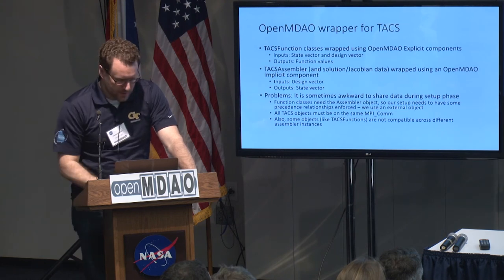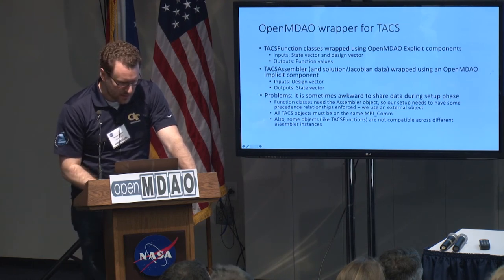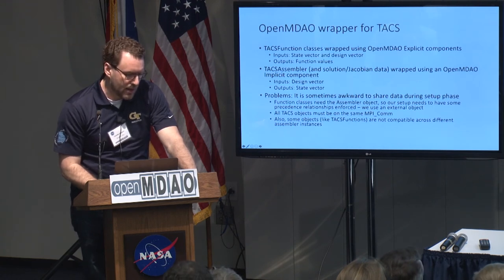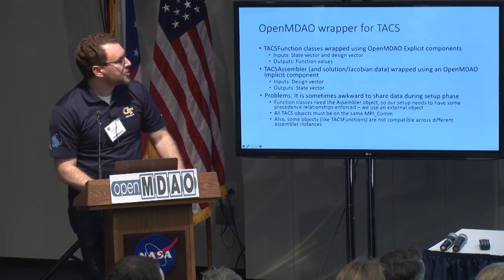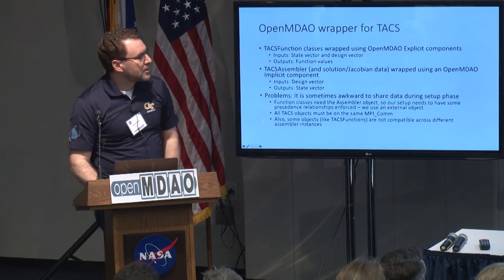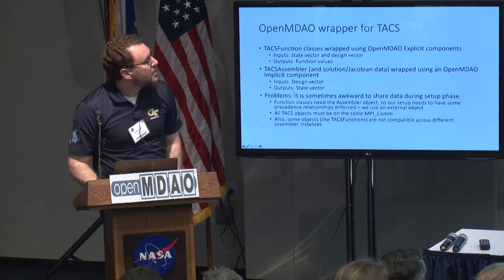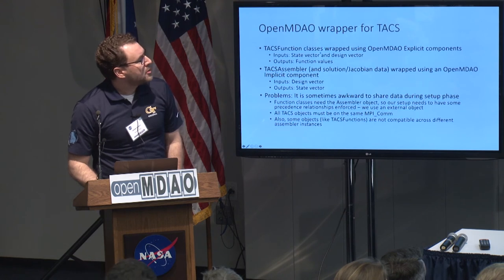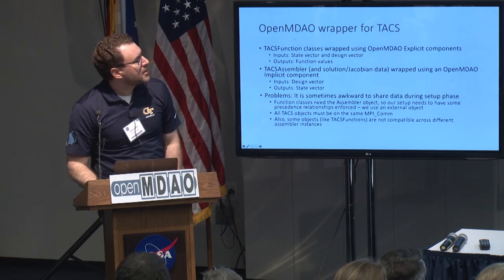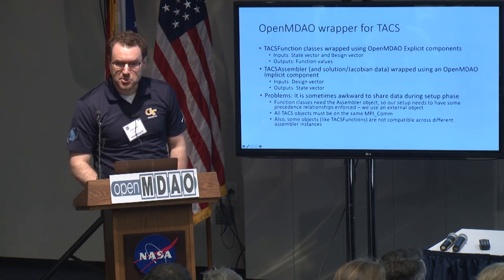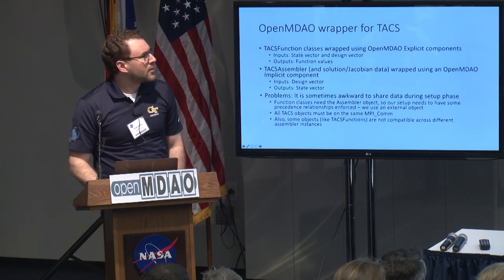The TAX assembler is the main class. We treat this as an implicit component, with some additional information for assembling the Jacobian and solving linear systems, and then the outputs. The functions of interest we handle through this TAX function wrapper for OpenMDAO, which we treat as an explicit component.